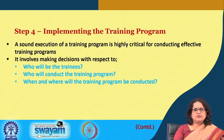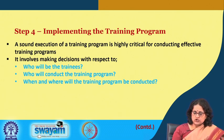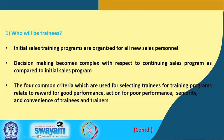After deciding on a training method, the next step is implementing the training program. Sound execution is critical. Key decisions include who will be the trainees, who will conduct the training, and where and when it will take place. For initial training, all new sales personnel are included. For continual training, selection criteria include reward for good performance, action against poor performance, seniority, or convenience of trainees and trainers.